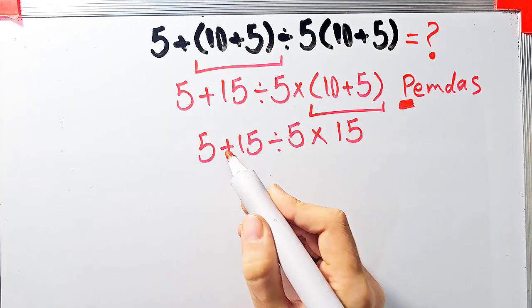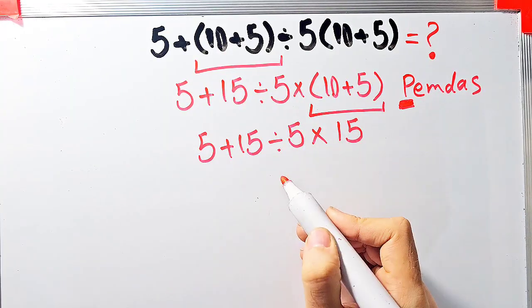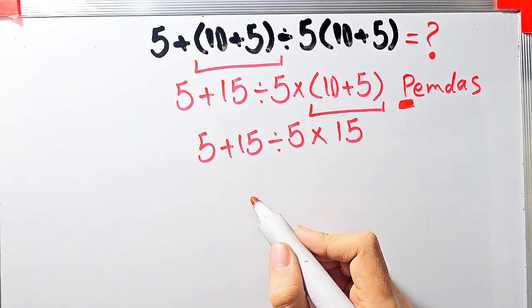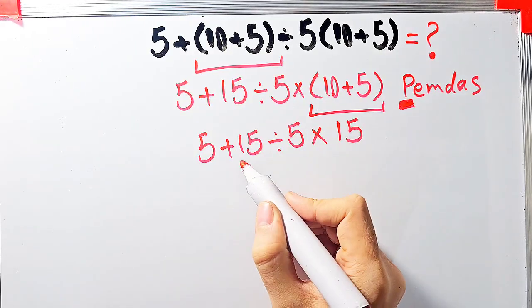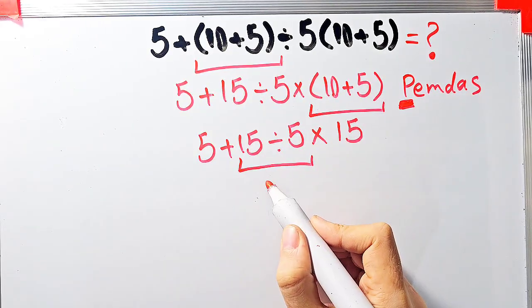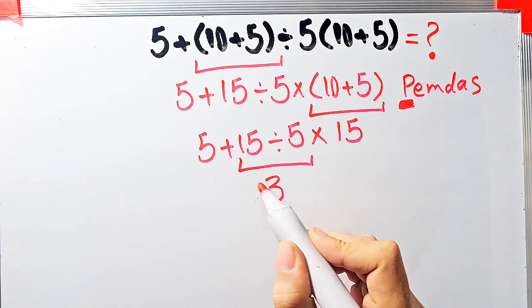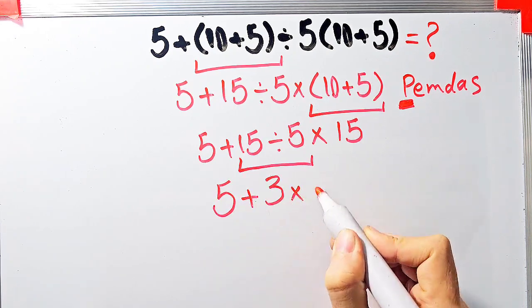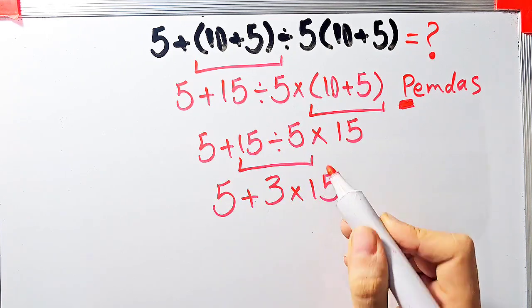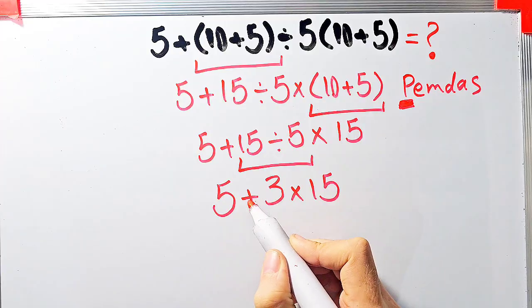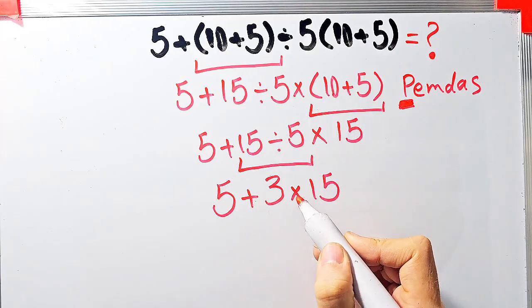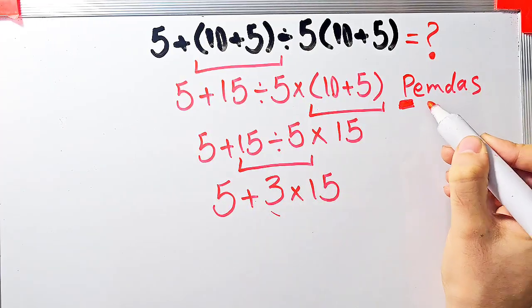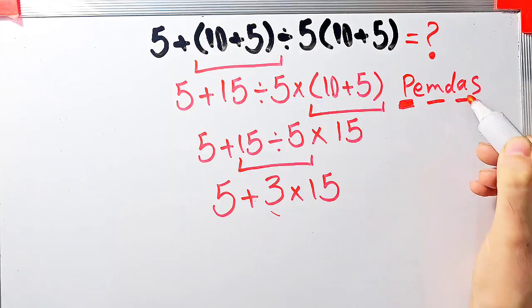Now we have addition, division, and multiplication. First we simplify the division: 15 divided by 5 equals 3. Now the question is 5 plus 3, then times 15. We have addition and multiplication; first we do the multiplication because multiplication has higher priority than addition.